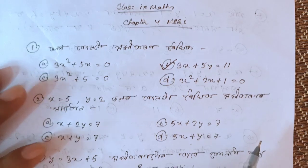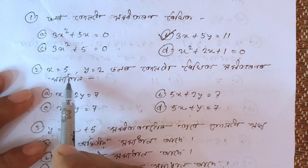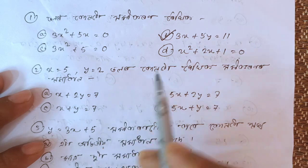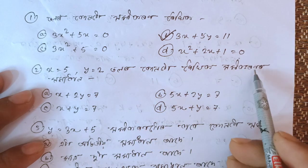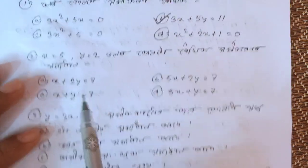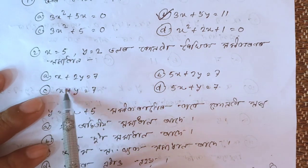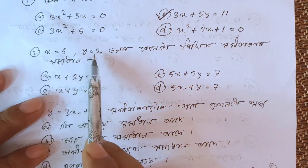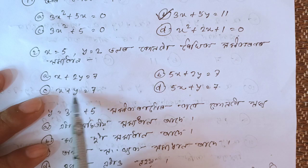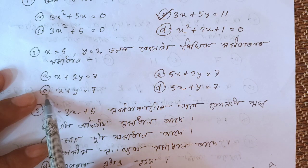The next question is x equals 5, y equals 2. So x equals 5, y equals 2. So c equals 5, y equals 2. Then you can see the same thing.